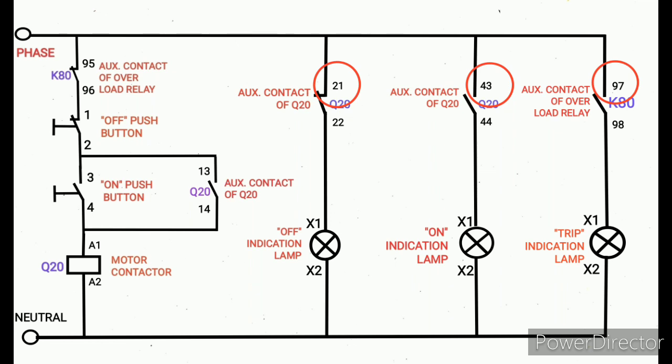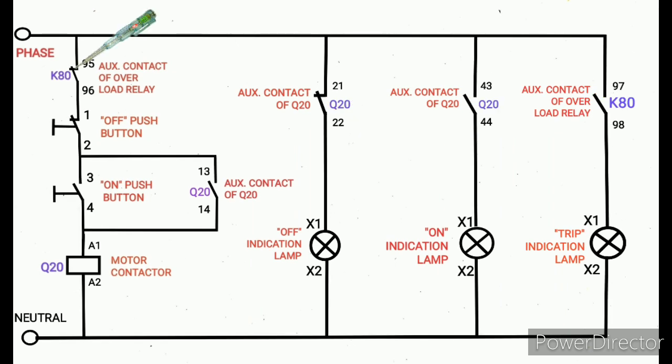Then I am going to check one by one, step by step. First, initially, the overload relay auxiliary contact K80 95. I am going to check whether the tester glows. That line is okay.